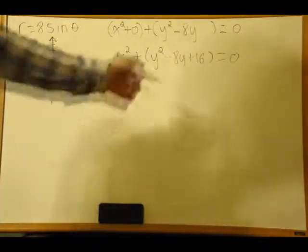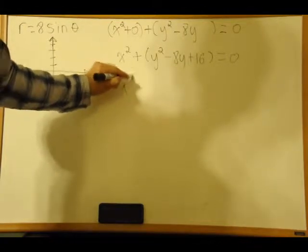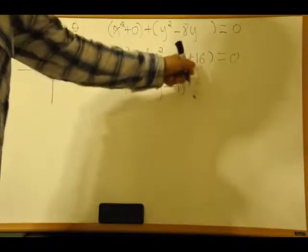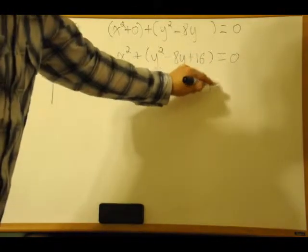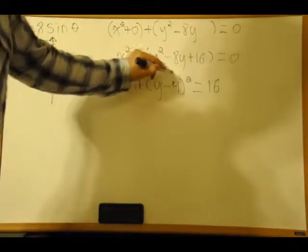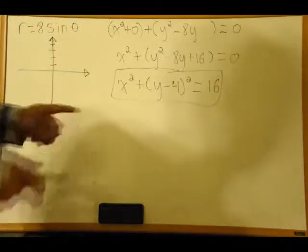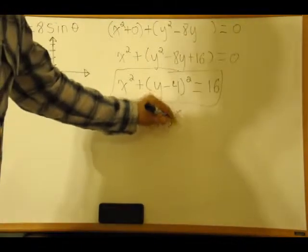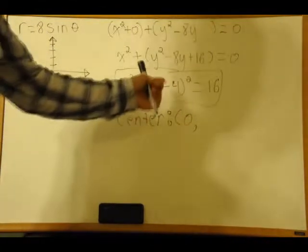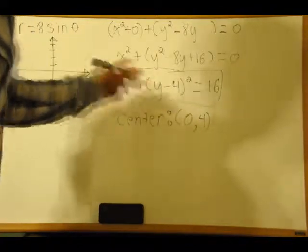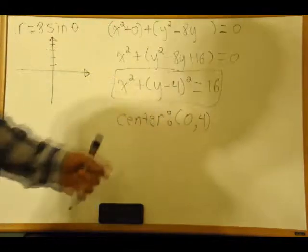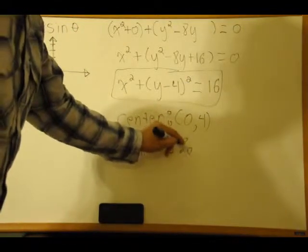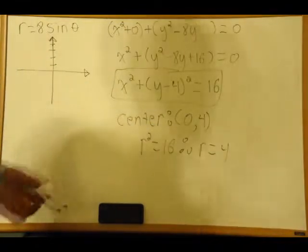This factors nicely: x squared plus (y minus 4) squared equals 16. Since we added 16 to the left side, we add 16 to the right. So we've finished the rectangular form, and obviously this is a circle. The center is at x equals 0 and y equals 4, because the general form is (y minus k), so minus minus is plus. The radius is r squared equals 16, therefore r equals 4.